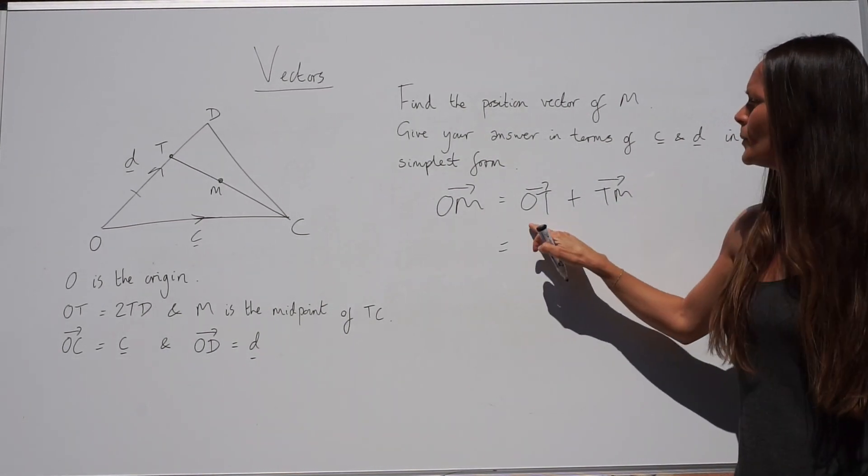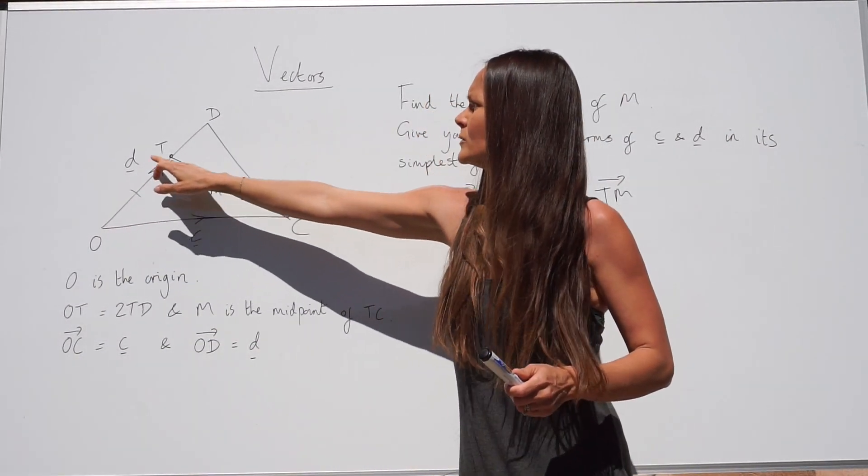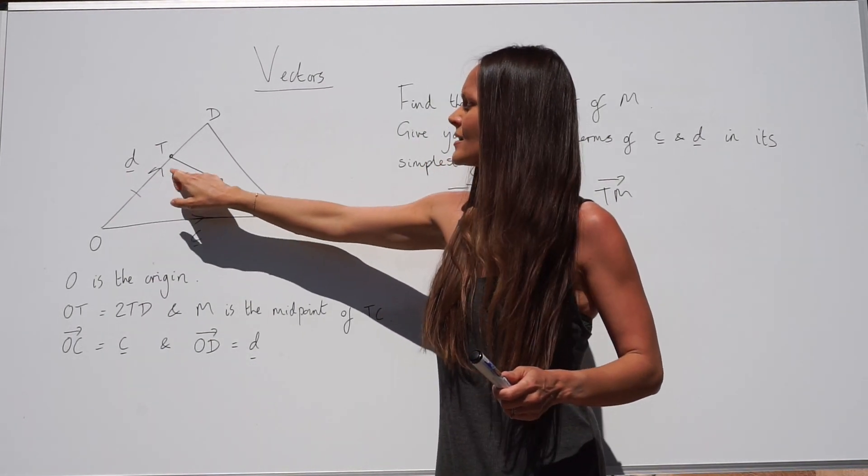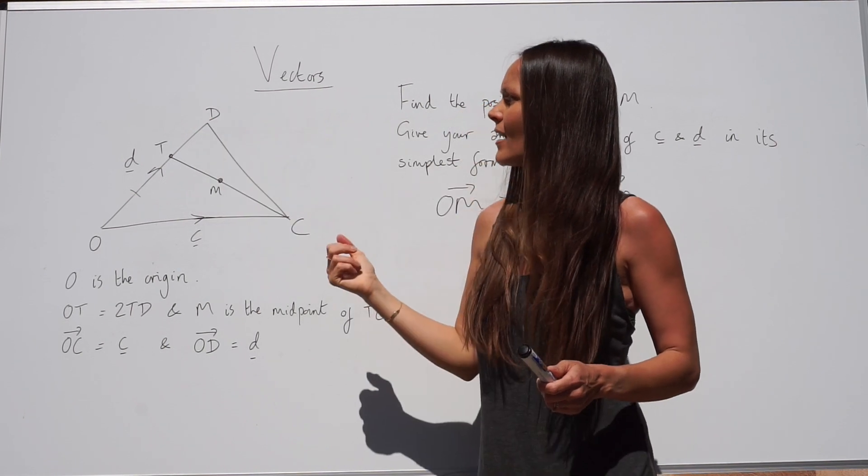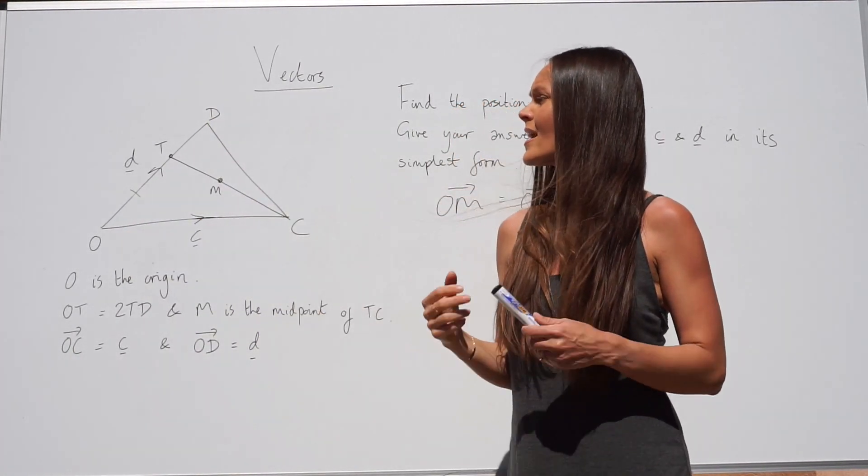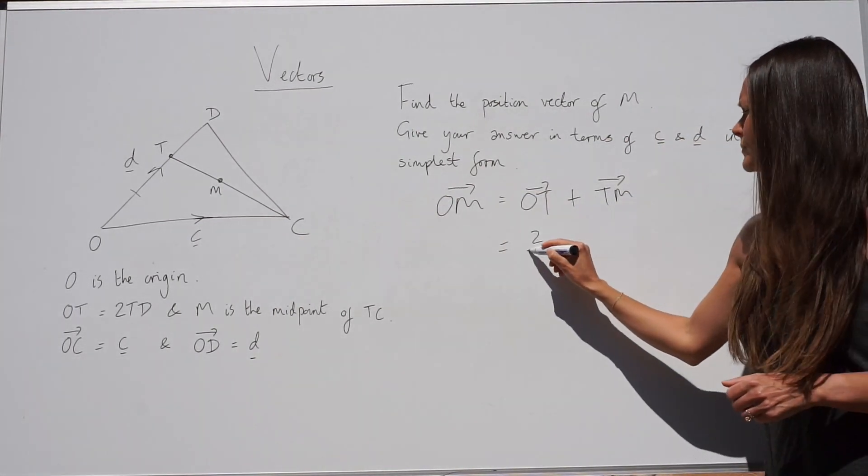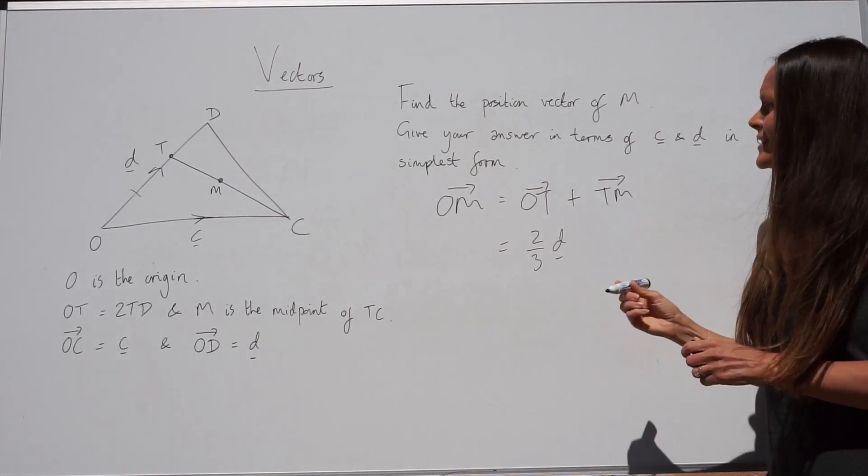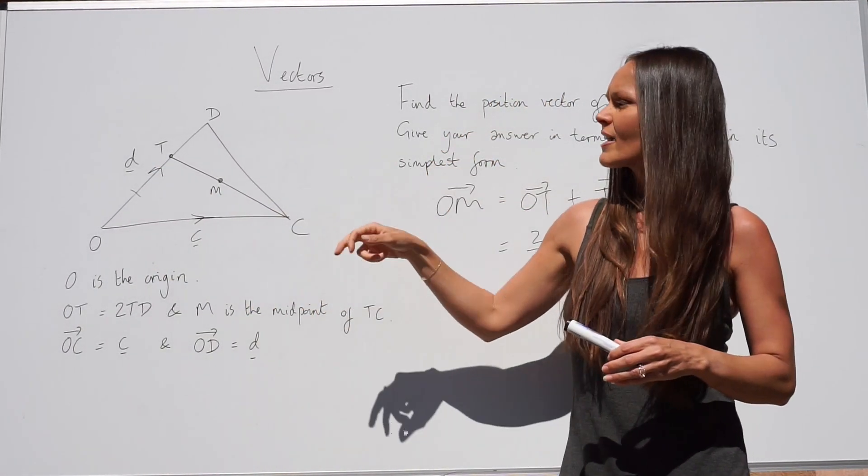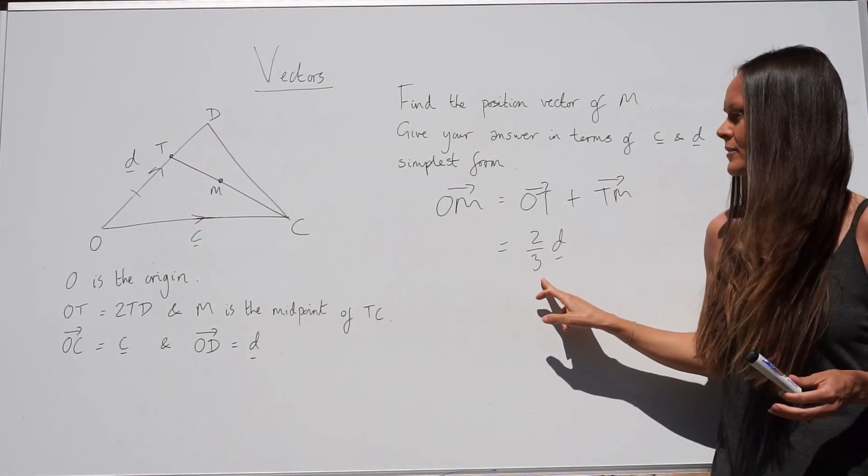So OT, we can already work this vector out. Remember this whole line from O to D is vector D. And OT is two parts out of three along that line. So it's two thirds of the way along that line. So that means it's two thirds of vector D. That's the first part. Notice how we're travelling in the correct direction with this arrow. If we had been travelling in the opposite direction, against the direction of this arrow, this would have become negative.